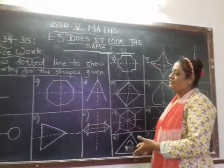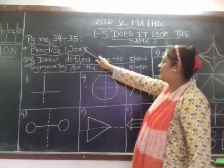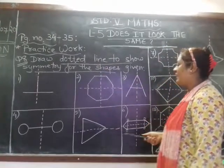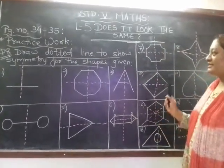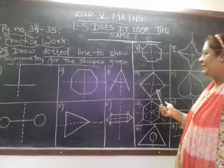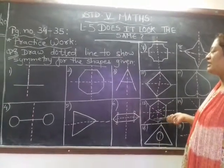Okay, further moving on to the question of the 8th and 9th that we saw in page 34 and 35. The question says, draw dotted line to show symmetry for the shapes.